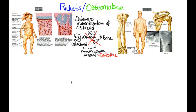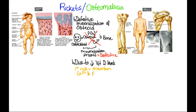This defect is due to low levels of vitamin D. If you recall, vitamin D acts on the intestine, kidney, and bone in order to resorb both calcium and phosphate. The primary role of vitamin D is to maintain both calcium and phosphate within the blood.